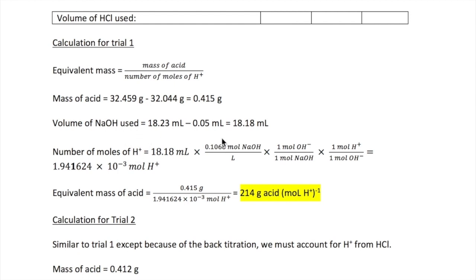To get the number of moles of proton, we first need to get the volume of NaOH that we use, which is 18.18 milliliter, and then we multiply that volume by the concentration of the standardized NaOH, and then use stoichiometry to relate that to H+, or proton, and then giving us 1.941624 times 10 to the power of minus 3 moles of H+. Again, here I'm indicating where my sig fig should end. To get the equivalent mass, I divide my mass by the number of moles of the protons, giving me 214 grams of acid per mole of H+.